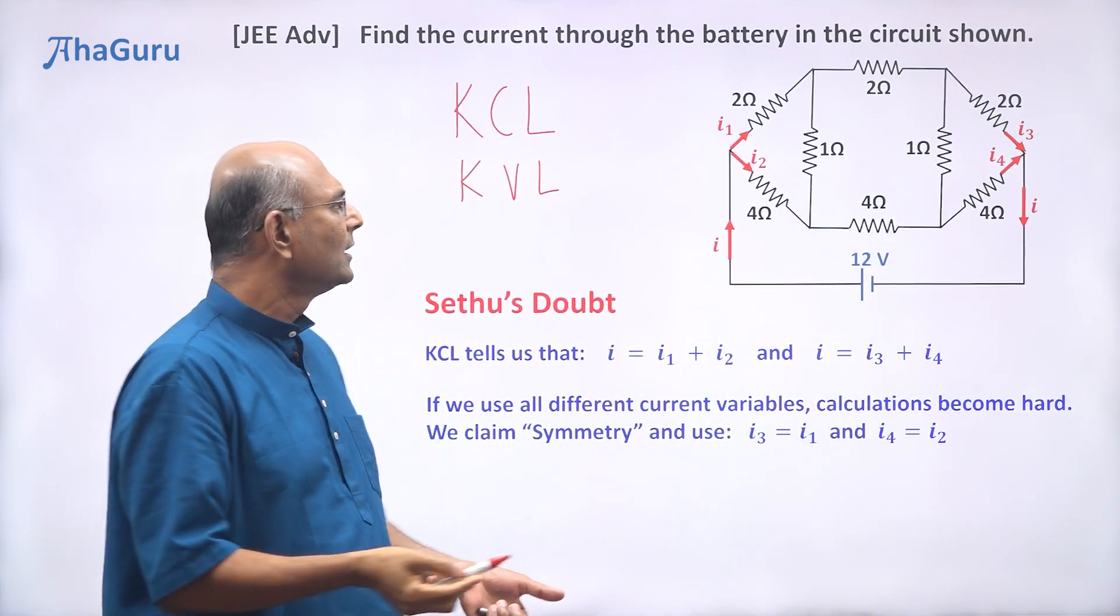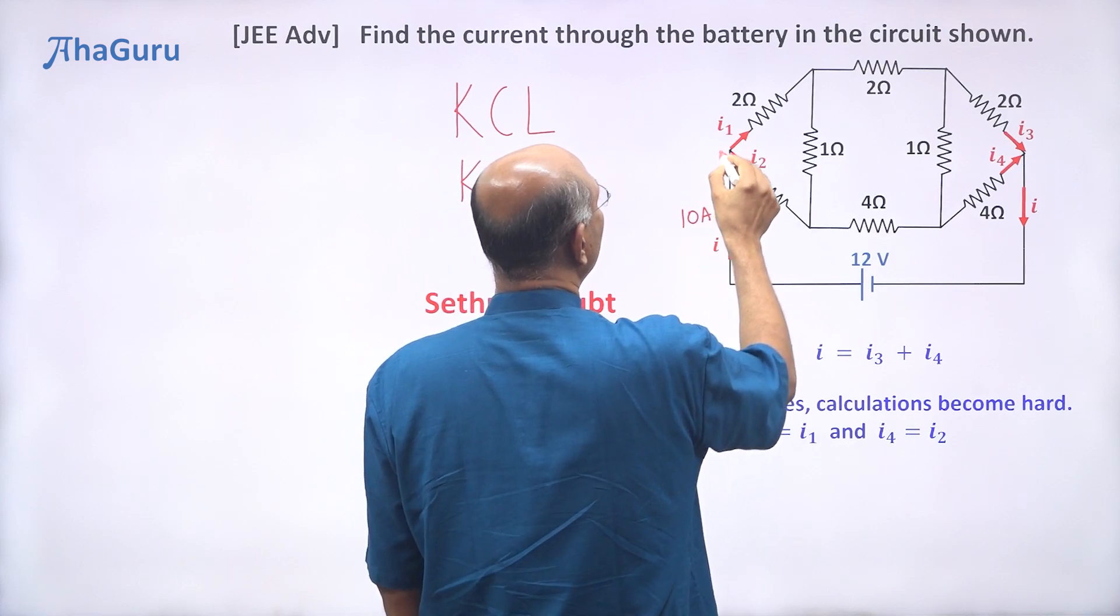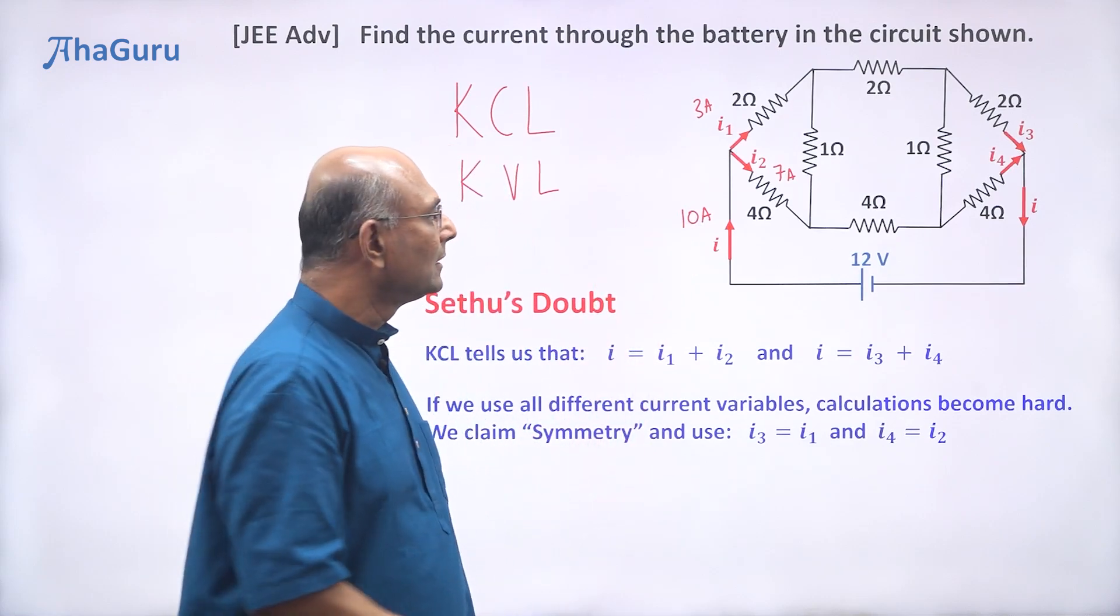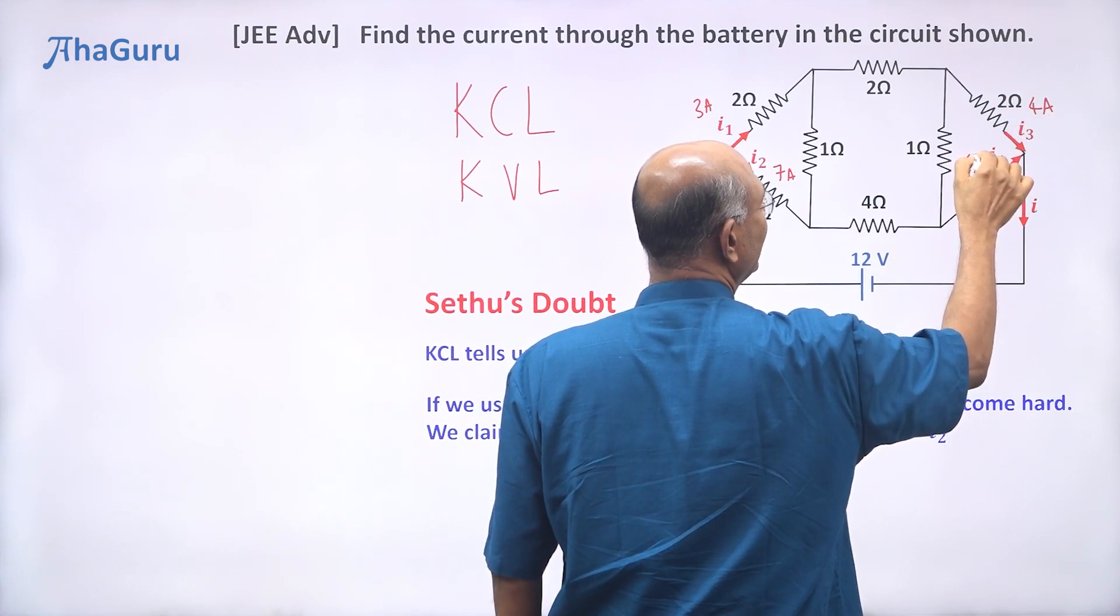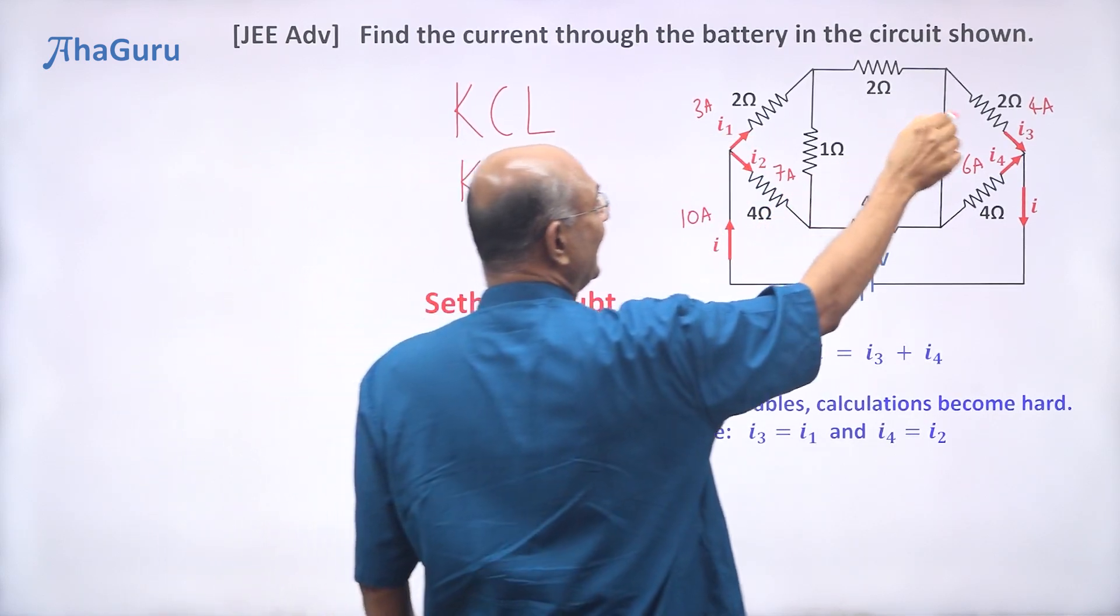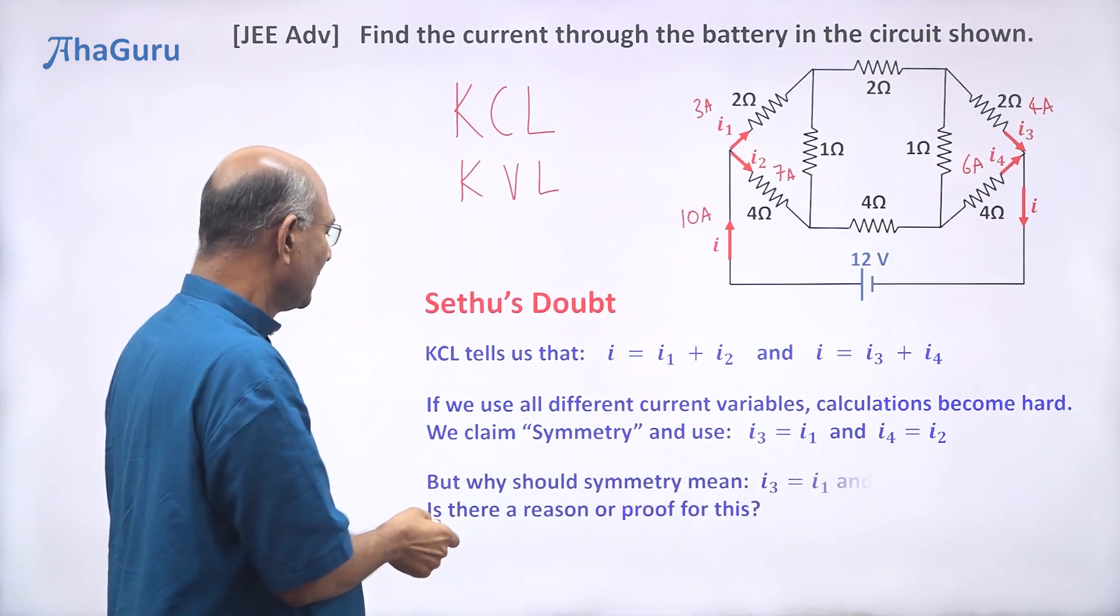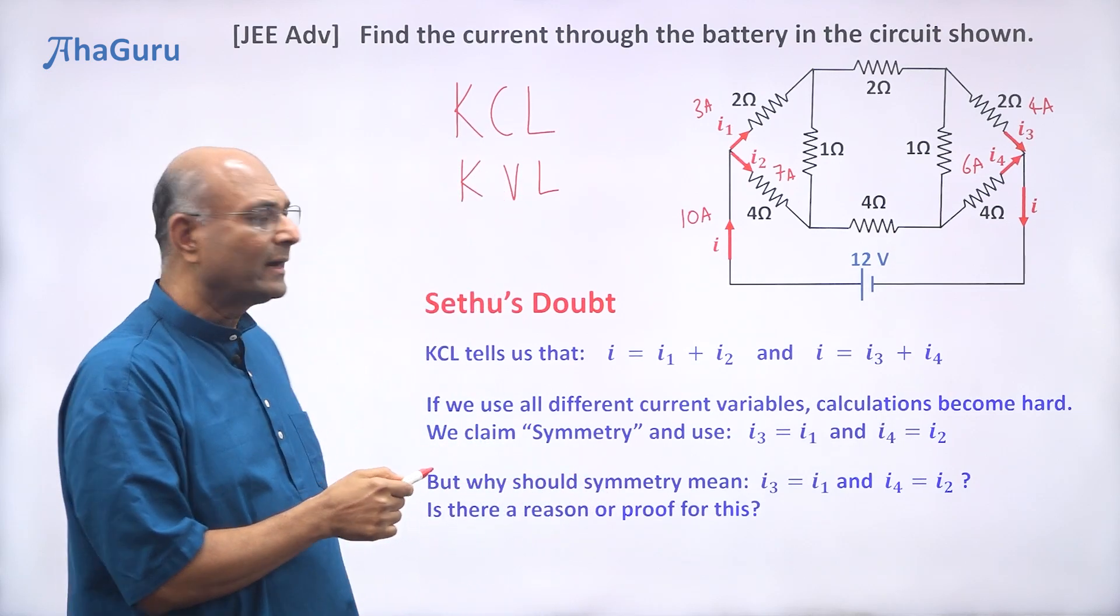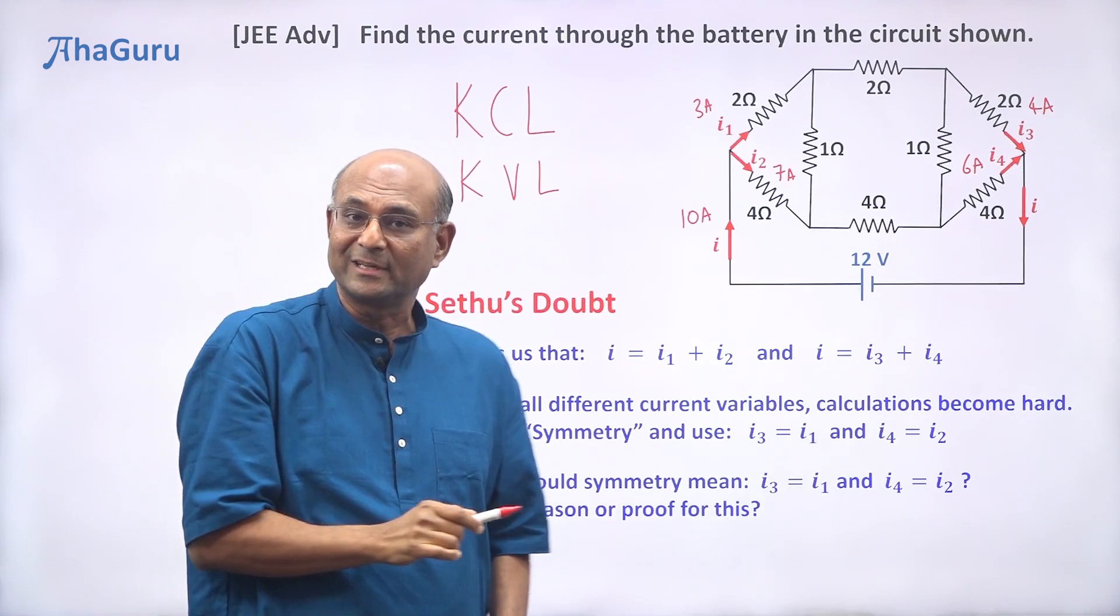But why should that be true? Suppose I say that this current coming in is 10 amperes. Let's say this splits up as 3 amperes and 7 amperes. It has to add up to 10. That also has to be 10. But you can say that this can be 4 amperes and 6 amperes, right? 4 plus 6 is also 10. So how do I know that is also 3 and this is 7? How do you know that I3 must be 3, which is I1? How do you know I4 must be equal to 7, which is I2? What is the reason that symmetry implies that this current is equal to this current? Is there a clear reason or proof for this?